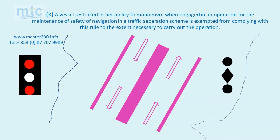A vessel restricted in her ability to manoeuvre when engaged in an operation for the maintenance of safety of navigation in a traffic separation scheme is exempt from complying with this rule to the extent necessary to carry out the operation. Vessels engaged in such an operation exhibiting the lights or shapes prescribed in Rule 27b may be exempt from compliance with Rule 10, and may even be justified in proceeding in a direction opposite to the general direction of traffic flow. However, they are expected to comply with Rule 10 whenever possible.